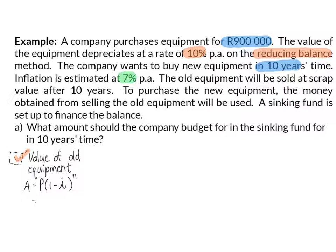Originally, the equipment was worth R900,000 and it depreciates at a rate of 10% per annum for 10 years. That means after 10 years, the old equipment can be sold for R313,810.60.